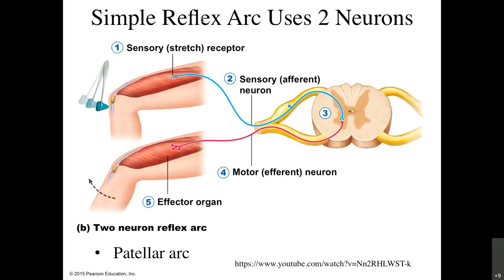We call this a simple reflex. A simple reflex arc uses two neurons — the afferent (sensory) neuron and the efferent (motor) neuron. The classic example is the patella arc. If you've ever sat on a table in a doctor's office and had a medical professional hit your leg, they're activating your patella arc — that involuntary reflex. There's a YouTube video linked here about reflexes if you have more questions.